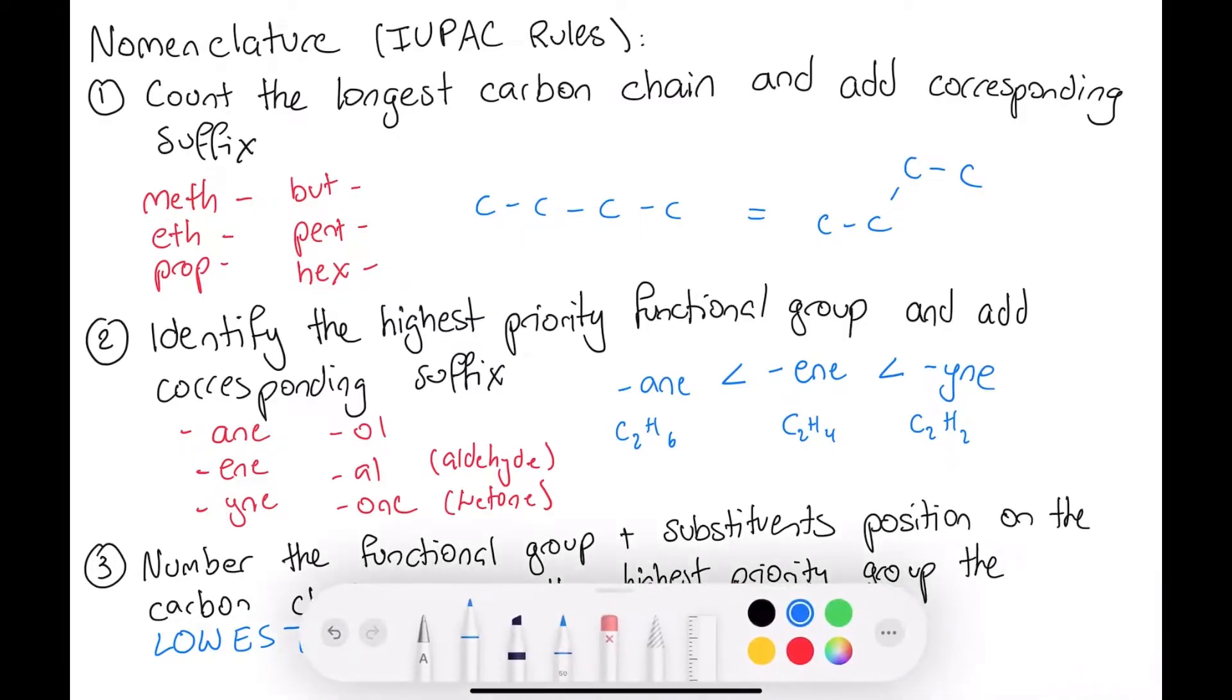The very first thing you need to do is to count the longest carbon chain and then give the suffix for each corresponding number. For one carbon it's meth, and so on. For IB, I think you only need to know up to six carbons, which is hex. It's important to note that the chain is for every carbon-to-carbon bond. So sometimes IB would draw the structure in a way to indicate its geometrical shape - this is still a four-carbon chain, not just two.